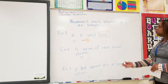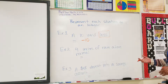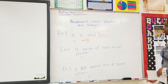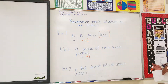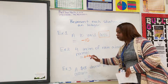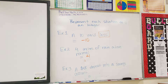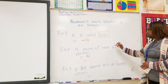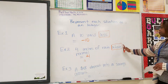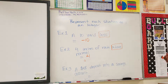Example number two: four inches of rain above normal. How would we represent four inches of rain above normal as an integer? We would represent it as positive 4. Remember, when we represent a positive integer, we do not put a positive sign in front of it. We only represent it as a 4. Our key word — how do we know it is positive? Because they said four inches of rain above — going up — normal. So therefore it will be represented as a positive 4.